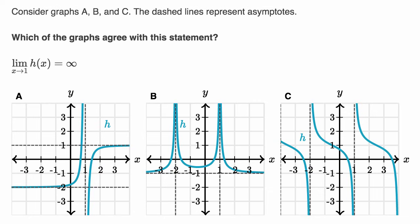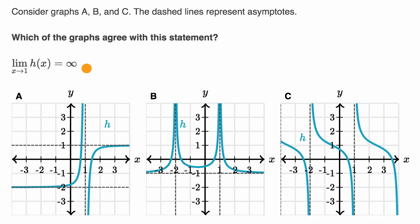The problem says: consider graphs A, B, and C. The dashed lines represent asymptotes. Which of the graphs agree with the statement that the limit as x approaches one of h of x is equal to infinity? Pause this video and see if you can figure it out.